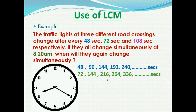The third traffic light changes at every multiple of 108 seconds — first at 108 seconds, then at 216 seconds, and so on. The time at which a traffic light changes is a multiple of its duration. Our question is: at which time will all three again change simultaneously, given they last changed simultaneously at exactly 8:20 a.m.?